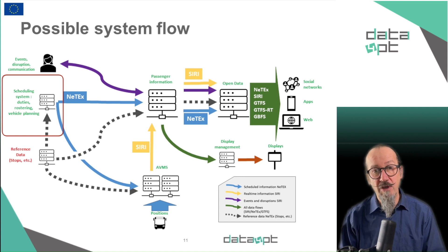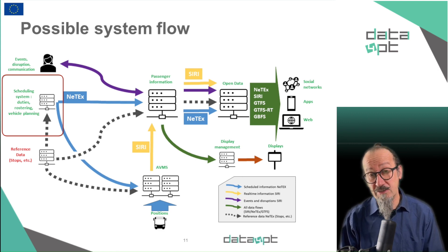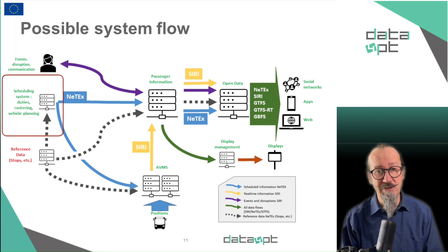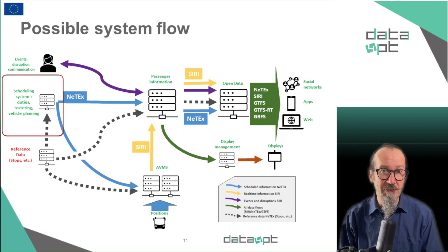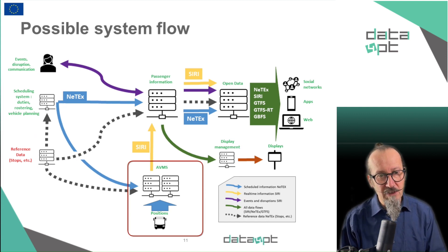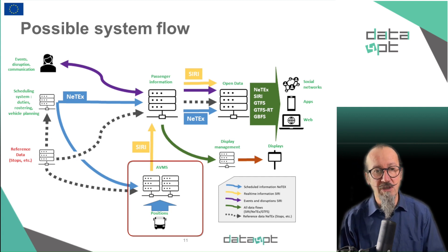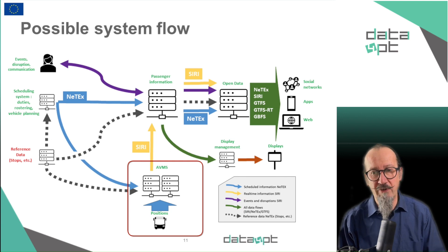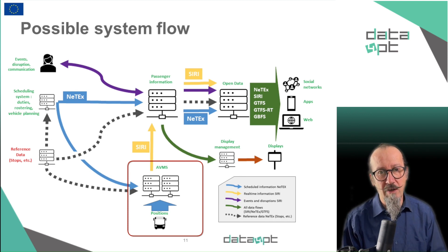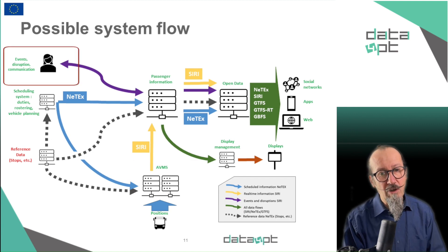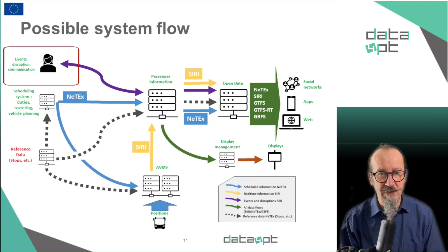Still on the left, you have the scheduling system, which defines the vehicle assignment, the driver assignment, etc. NetX is a very good candidate and can carry all the information defined by the scheduling system, typically to provide it to AVMS or to passenger information systems. The AVMS at the bottom needs to receive very accurate information about what has been defined at scheduling time, and from there, while doing operations, it will provide real-time information using Siri — typically to displays or to passenger information systems.